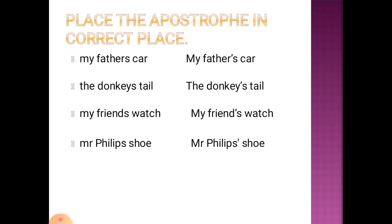Now we are going to place the apostrophe in the correct place. Here are a few examples. My father's car — the apostrophe is placed before the s. The donkey's tail — apostrophe s. My friend's watch — apostrophe s.